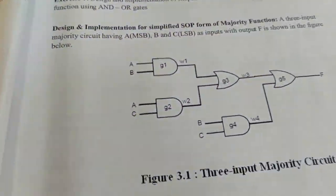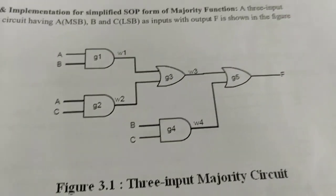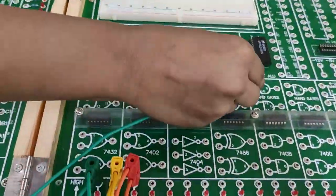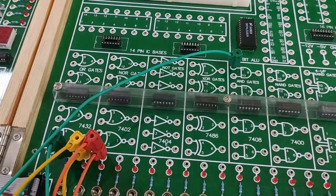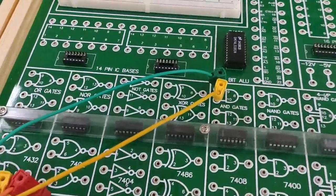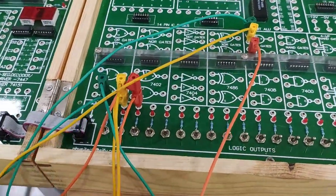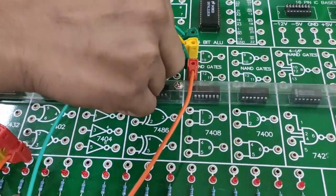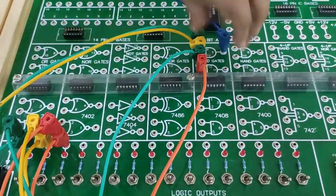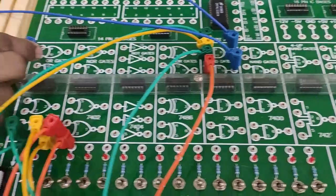Now we are going to demonstrate the majority circuit. For this three-input majority circuit we are going to use three AND gates and two OR gates. For the majority circuit, if the majority of inputs are one it will give output one, and if the majority are zero it will give output zero. You can see AB is going to the AB inputs, and AC input is going here.